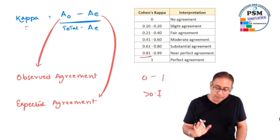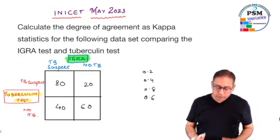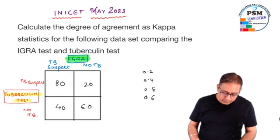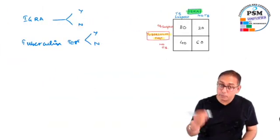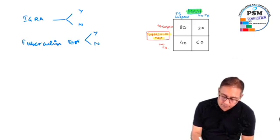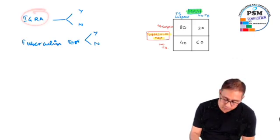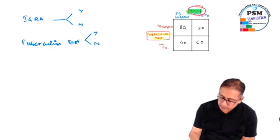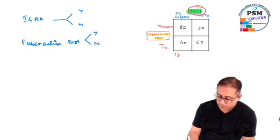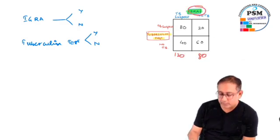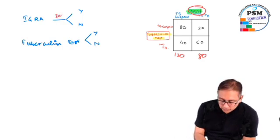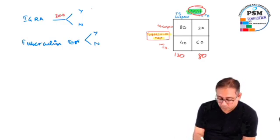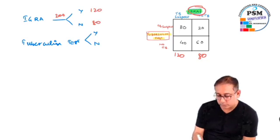Let us come back to the question and see how to find out observed agreement and expected agreement. This table was given in your exam. IGRA test was done in 80 plus 40, that's 120 people, and 60 and 20, that's 80 people. So 120 and 80 is 200 people. 200 people got IGRA test - 120 said yes and 80 said no.